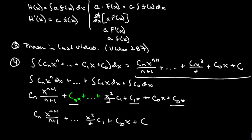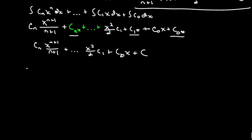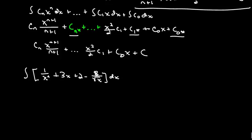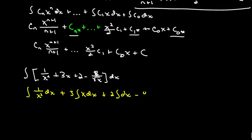Now I'm going to do example number six using all these formulas. I want to find the antiderivative of 1 over x squared plus 3x plus 2 minus 8 over the square root of x dx. I'm going to rewrite this by splitting it up: the integral of 1 over x squared dx, plus 3 times the integral of x dx, plus 2 times the integral dx, minus 8 times the integral of x to the negative one half dx.